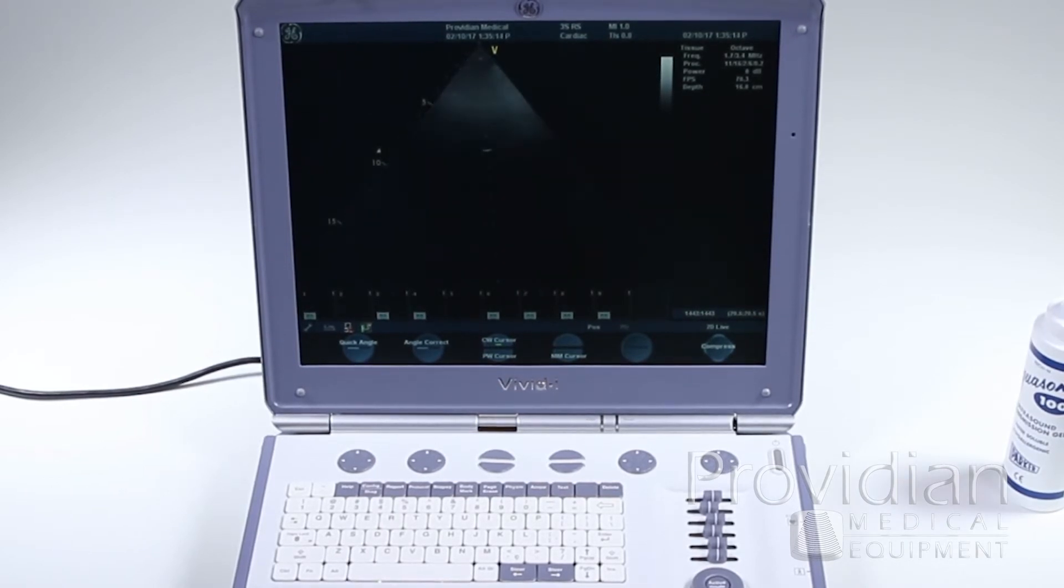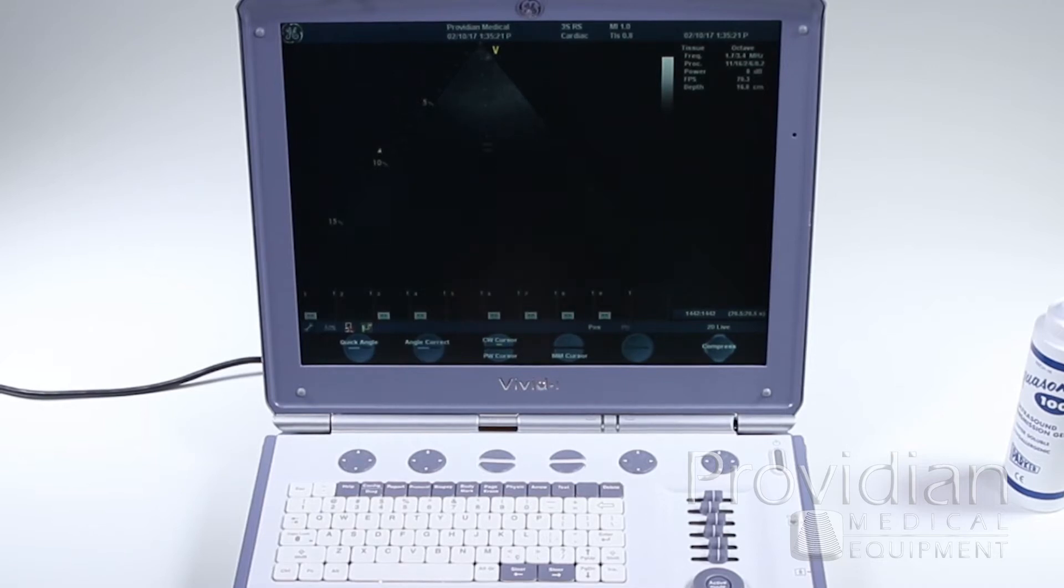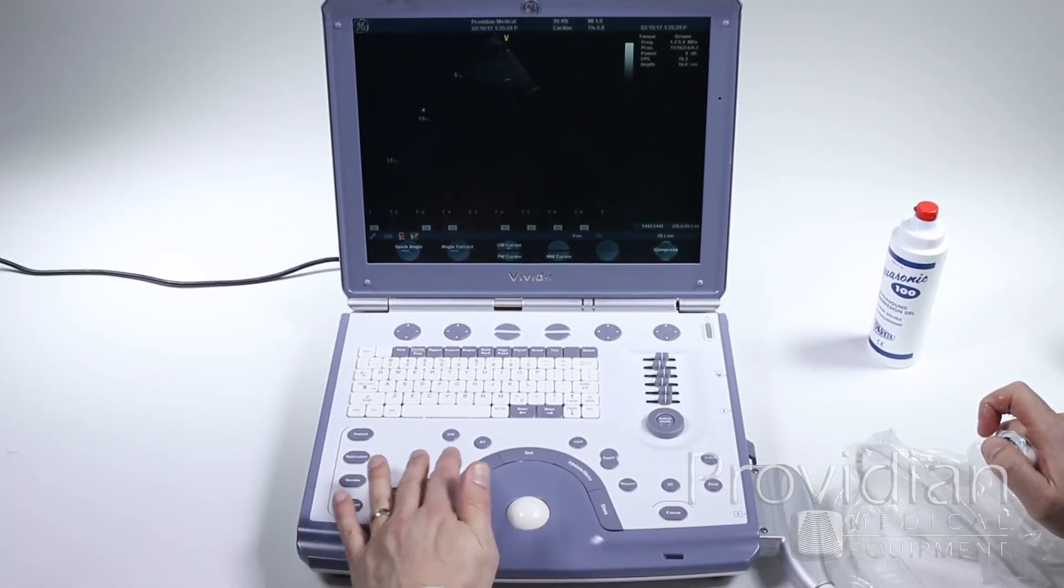We can start, and I've just got my thumb on the probe just to show that it is a live image. So we can do the cursor, select the area that we want to listen to, so let's just say it's right about there, and then we can click into pulse wave or M-Mode Doppler.